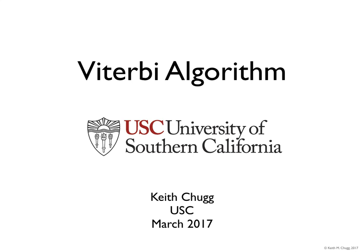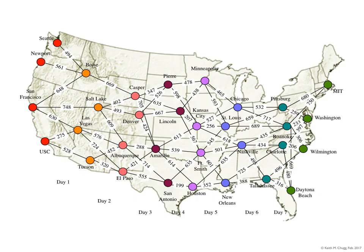Hello, my name is Keith Chugg, and I'm going to provide a very quick summary of the Viterbi Algorithm. I'm going to do this through an example of planning a road trip from the west coast of the United States to the east coast.